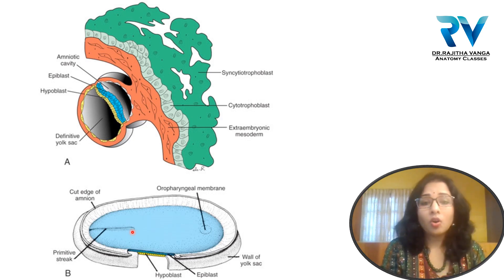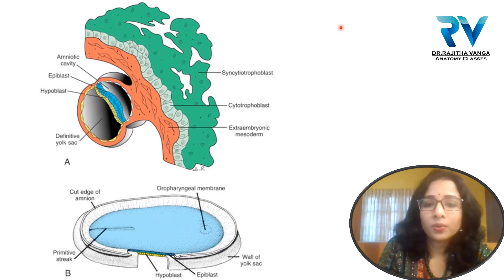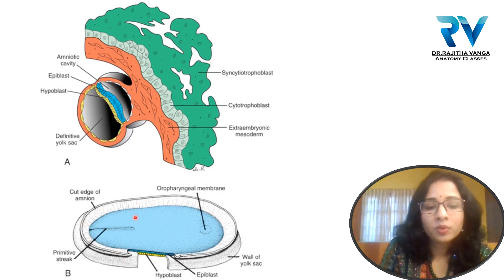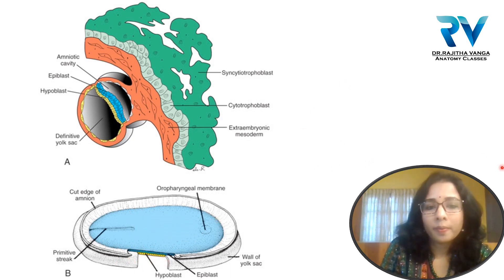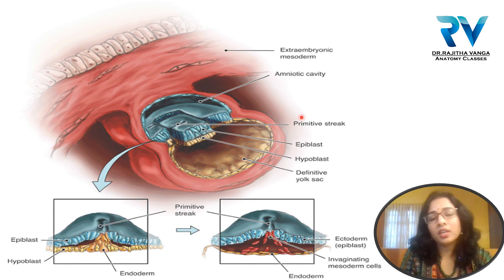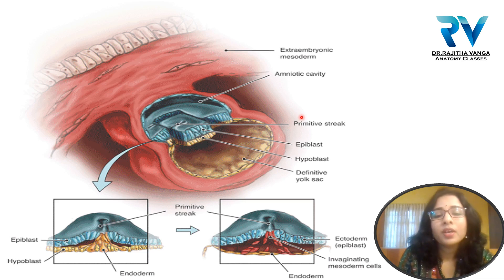The primitive node is also called the primitive knot or Hensen's node. Here we can see the primitive streak and the primitive node from a view above — the amniotic cavity is visible, the blue cells are epiblast cells, and the yellow ones are hypoblast cells. The primitive streak is a highly pluripotent structure containing highly pluripotent stem cells which keep on dividing.